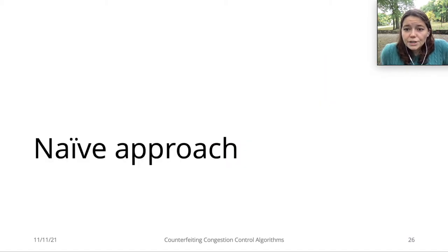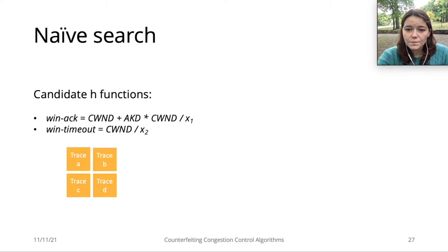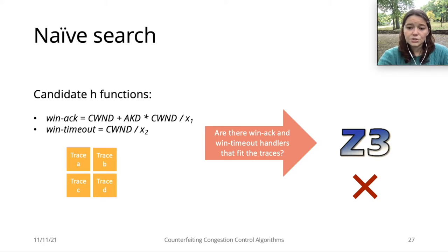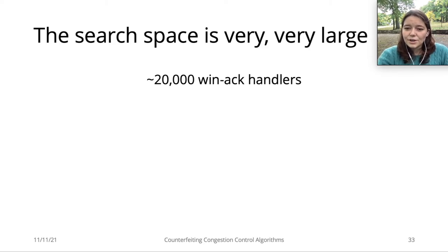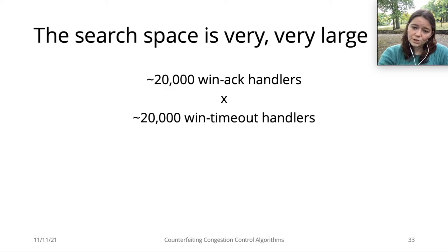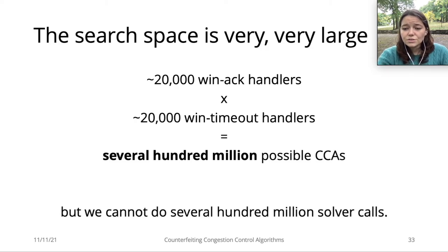We could try to apply a basic naive program synthesis method to the CCA domain. We start by enumerating candidate functions for the CCA handlers using the inputs and additional variables. Then we use an SMT solver, such as Z3, to answer the query: are there functions of this shape that fit all our collected network traces? If the solver answers no, we move on to the next set of candidate functions, and enumerate until we get a set that matches all our traces. However, we cannot apply this naive method directly to CCAs because our search space is very large. Even our very simple language, just expressive enough to synthesize RENO, allows for approximately 20,000 WinAC handlers, which combined with 20,000 WinTimeout handlers would result in several hundred million possible CCAs. Even if each solver call takes just one second, this naive approach could take over 15 years to produce a CCA.